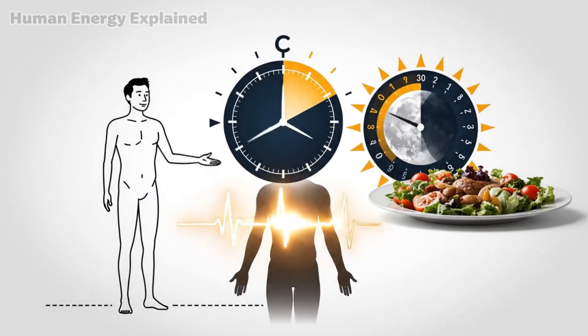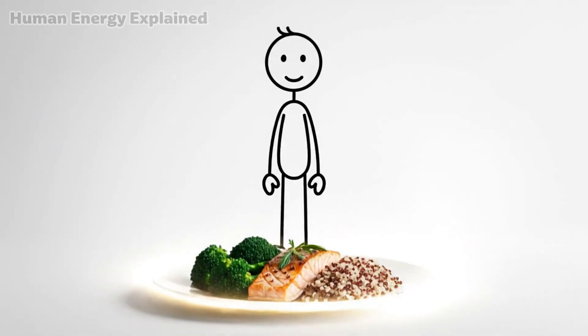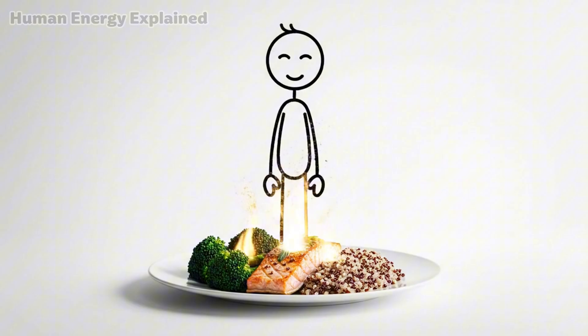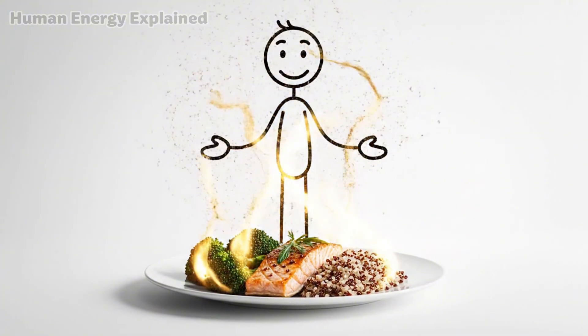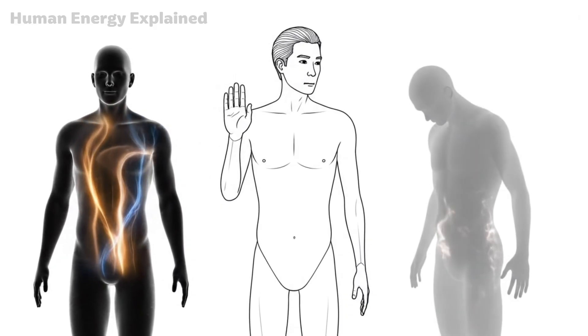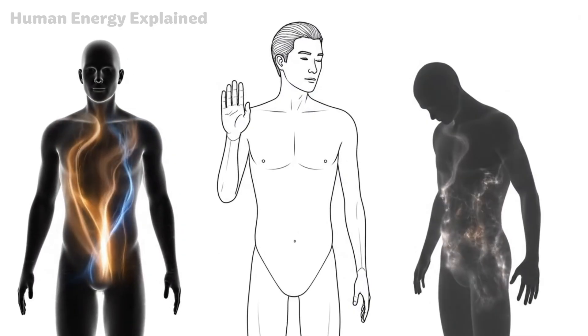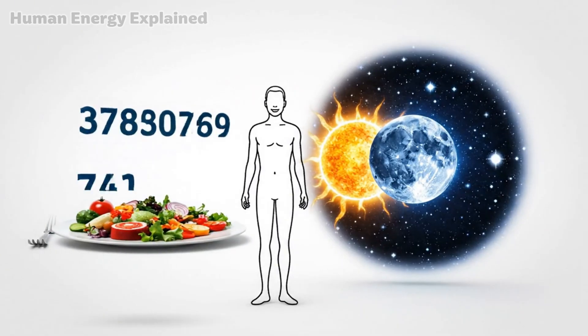Your circadian rhythm has likely aligned too. There's growing research suggesting that eating in sync with your body's internal clock, particularly consuming food earlier in the evening, and giving the body a long overnight fast supports better hormone regulation, sleep quality and overall metabolic health. Dinner as your one meal naturally fits this pattern.